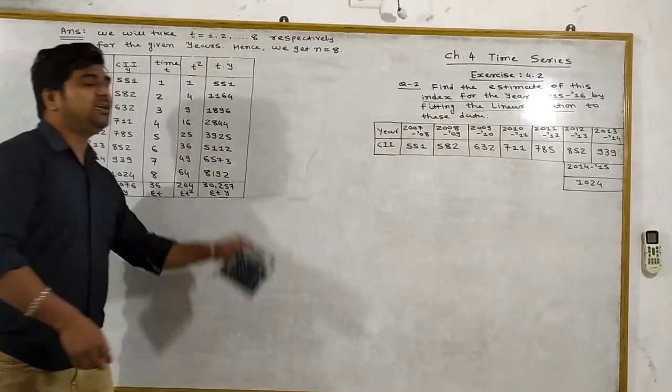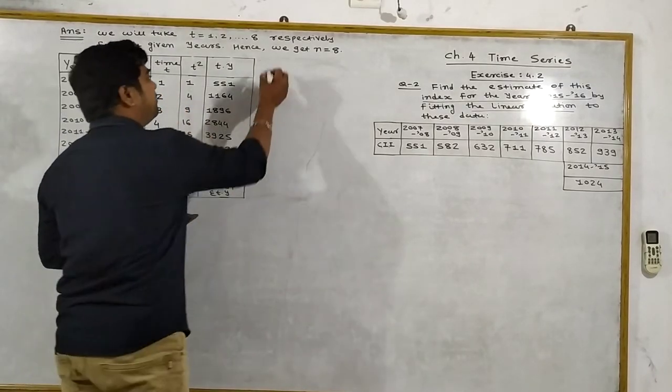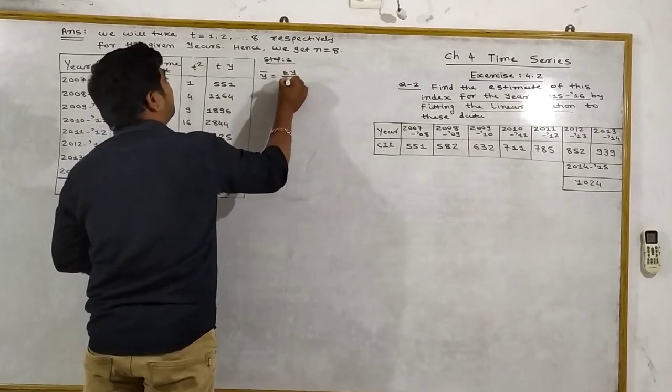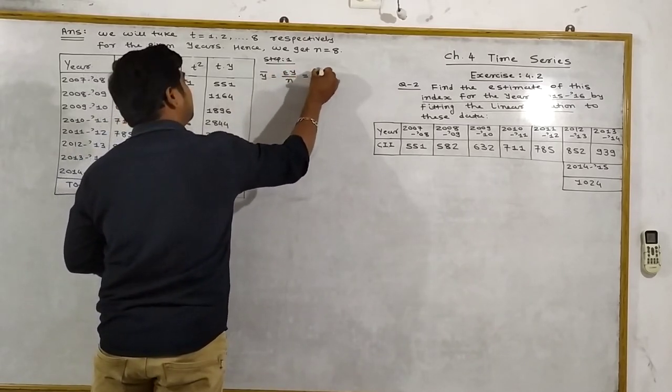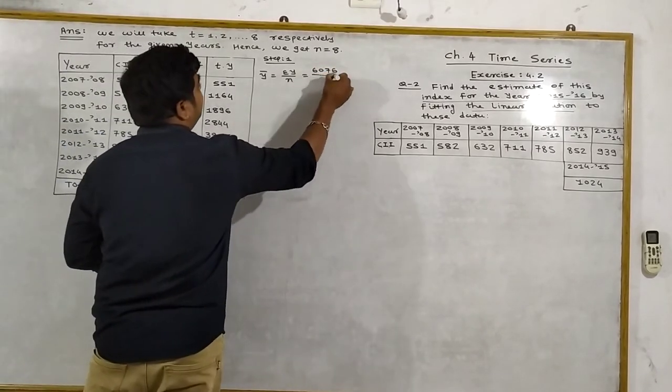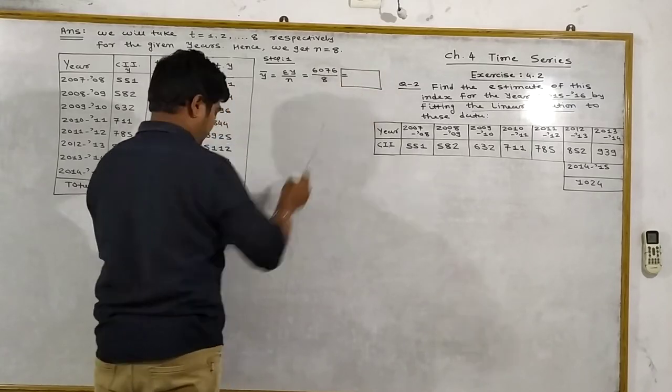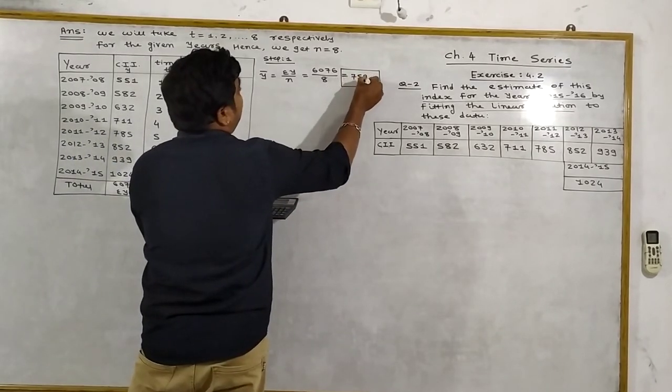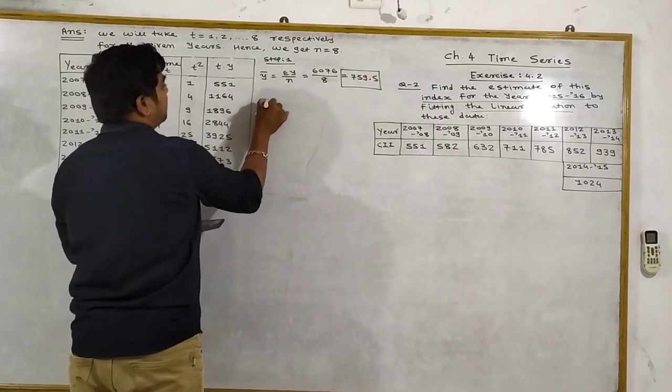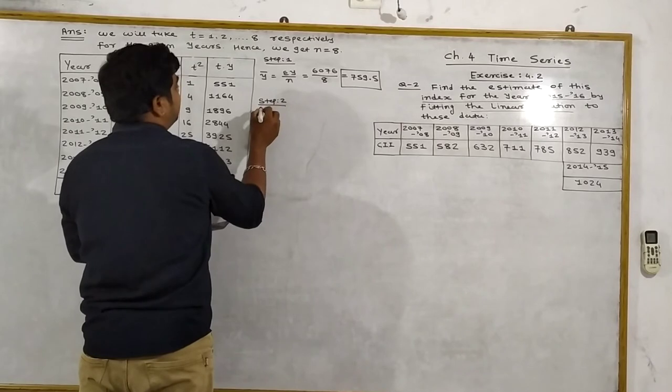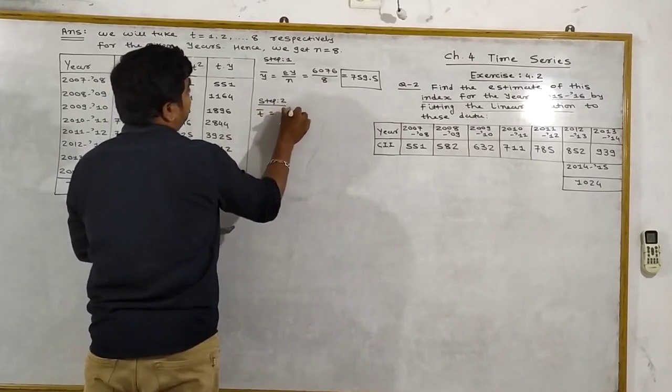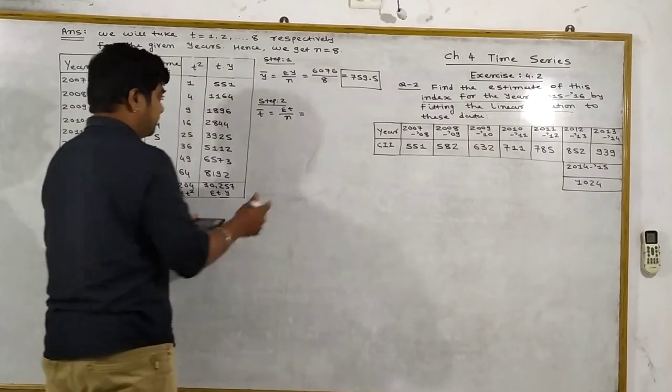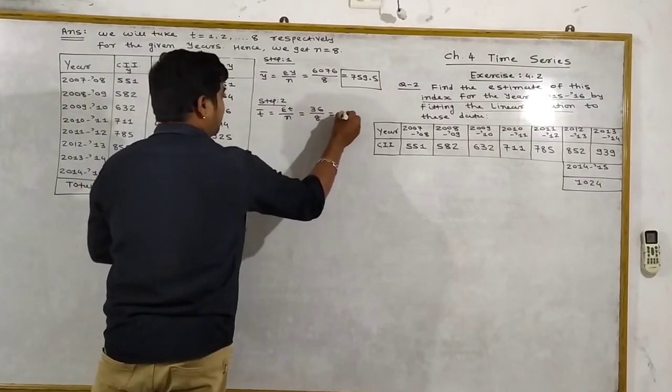Now following the steps. Step number 1: Y bar equals Sigma Y upon n, which is 6076 upon 8, equals 759.5. Step number 2: T bar equals Sigma T upon n, which is 36 divided by 8, equals 4.5.